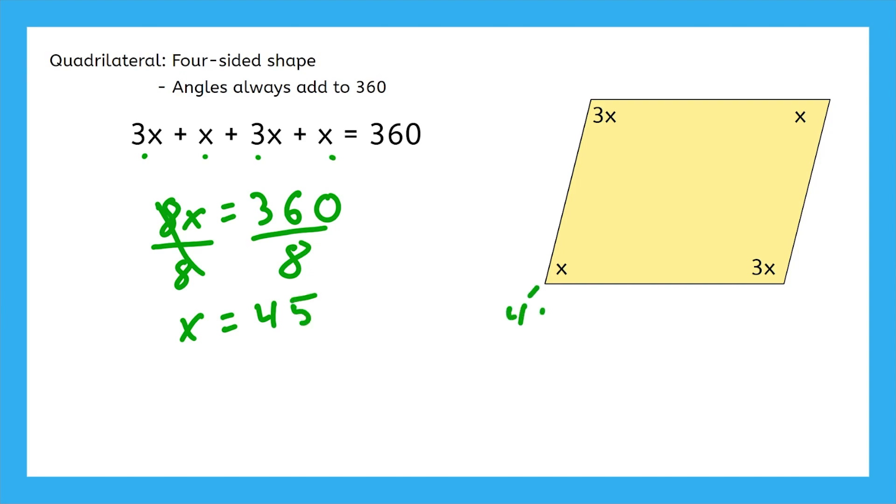If we plug it in and check it, these two are just x, so they're 45 degrees. And these other two are 3 times 45, or 135. If we add it all up, we get 360, just like we were supposed to.